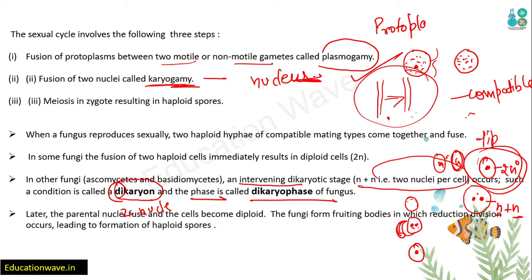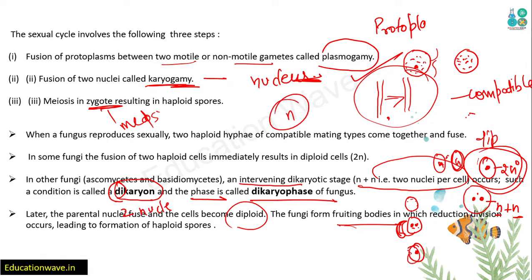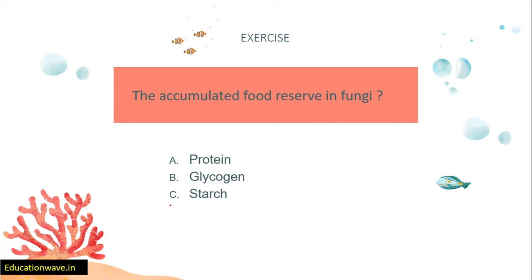When parental nuclei fuse, the cell becomes diploid (n+n). Now when the fruiting body forms from that zygote or diploid cell through reduction division, it always produces haploid spores. This is important to remember: the zygote undergoes meiosis - reduction - so from diploid 2n we get haploid n. Whenever diploid stage is formed, after reduction division we always get haploid spores.